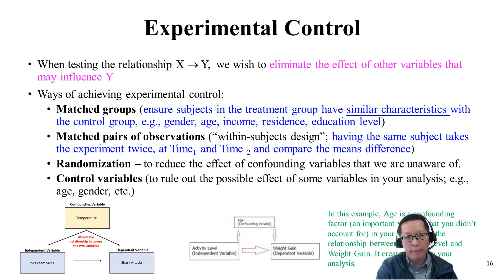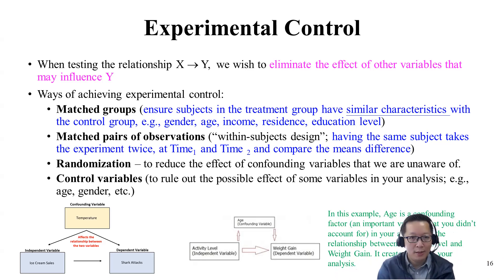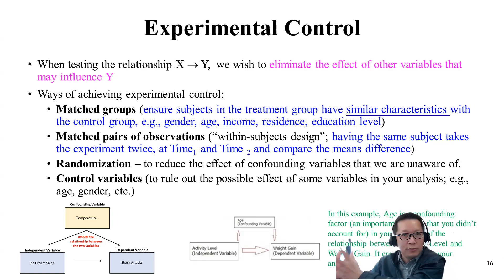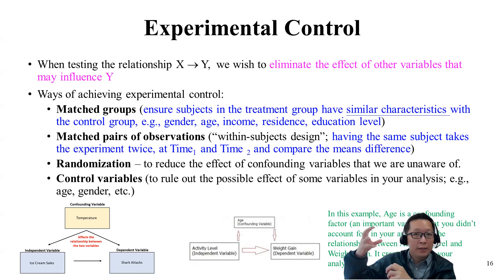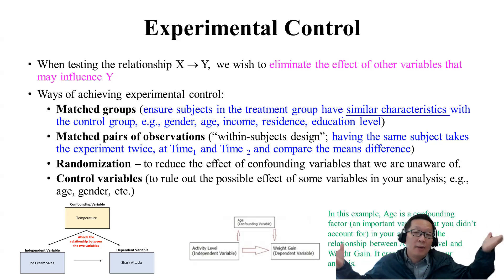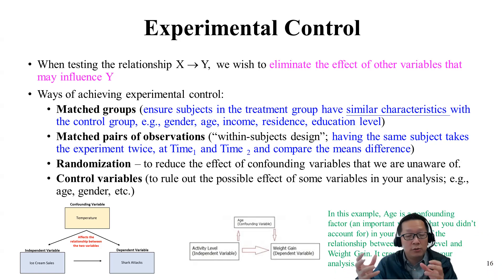The second method is matched pairs of observation — what we call within-subjects design — where you get the same person to take the experiment twice. You measure the person before, then conduct the intervention, then measure them again. If the second measurement is better than the first, you can say the change is because of the intervention or treatment given in the middle.